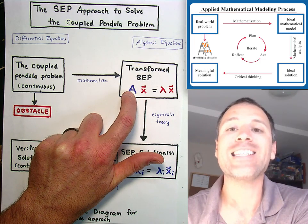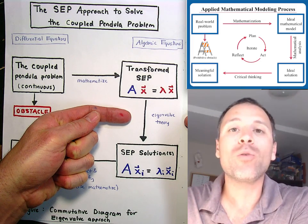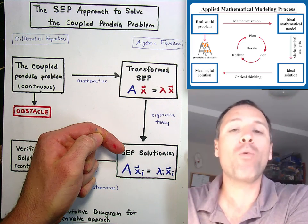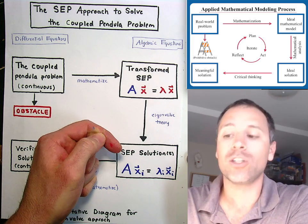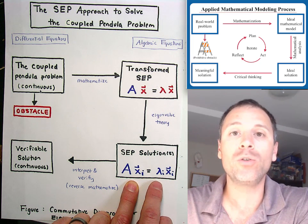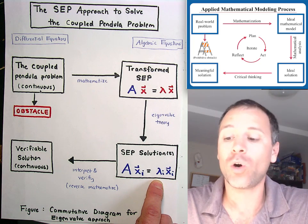Once we do that, we're going to have our transformed standard eigenvalue problem. And then we're going to apply eigenvalue theory from this introductory class to be able to come up with eigenvalue solutions. So the two solutions we're going to have are the mode one and mode two solutions. That literally comes from looking at a two-by-two matrix. Not so hard.